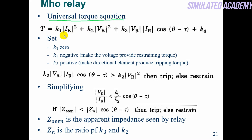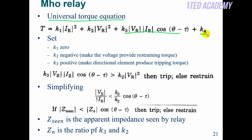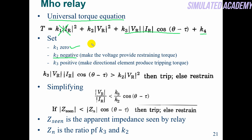The universal torque equation is: torque acting on the relay equals the torque due to current, the torque due to voltage, the torque due to the directional components, and the torque due to the spring. To set this for the Mho relay, we will set k1 equal to zero — there is no torque due to current — and k2 will be negative, or we say k2 will be less than k3, and k3 will be positive.